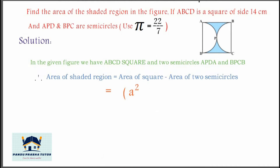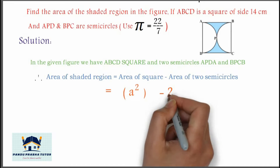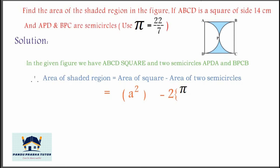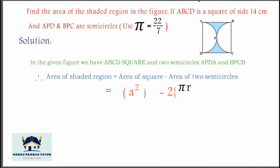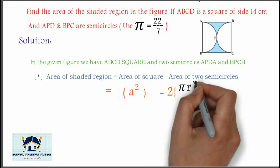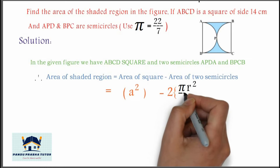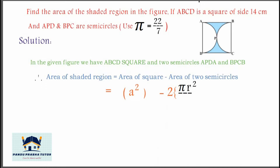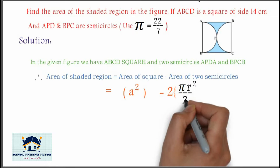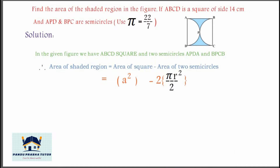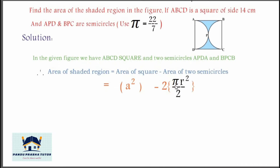Which is equal to: area of square, A squared, minus two semicircles — 2 into π r squared divided by 2. This is the formula to find area of a semicircle: π r squared by 2.